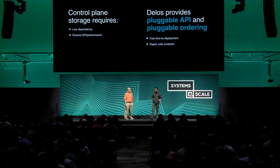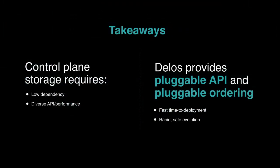To conclude: Jason described the control plane, why it's challenging and important. We have the requirement of low dependencies, and these systems have very diverse requirements for API and performance. Existing storage systems are monolithic — you can't really build one system for each use case. Delos provides a pluggable API and pluggable ordering. The practical outcome is we are able to hit deployment very quickly, and once deployed, we're able to change systems on the fly safely and quickly. Thank you. We'll take questions now.